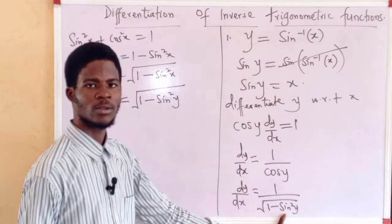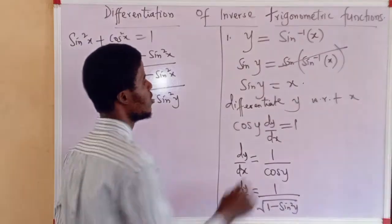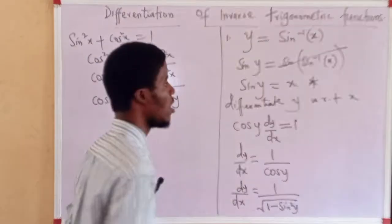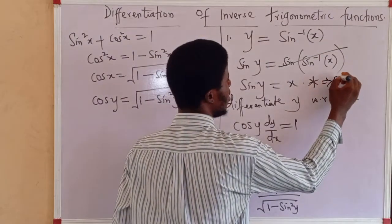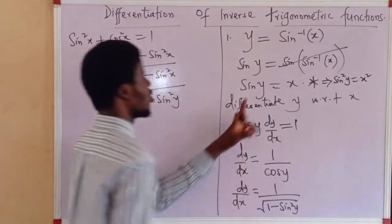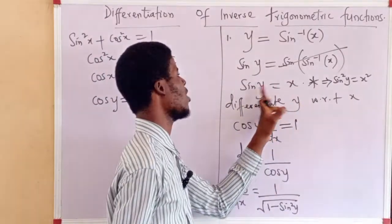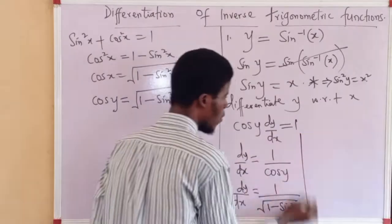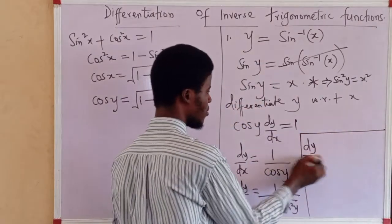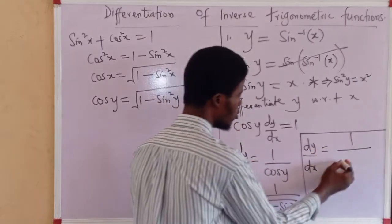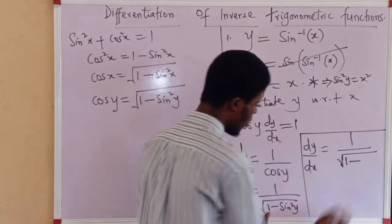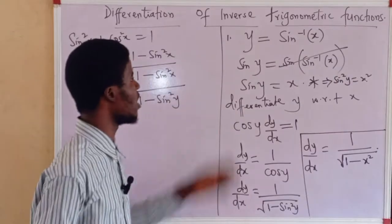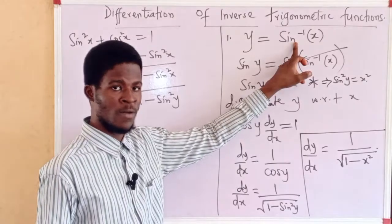Now, what is sin²y? We can actually get sin²y. Remember, sine y = x. If I square both sides, sin²y = x². So in place of sin²y, I'm going to write x². Therefore, dy/dx = 1 over √(1 − x²). This gives the derivative of the sine inverse of x.